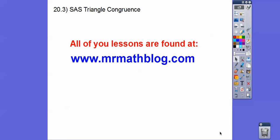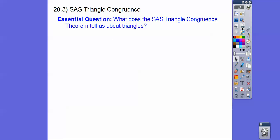Hey everybody, this lesson is SAS Triangle Congruence, which means side, angle, side. Our essential question is what does the SAS Triangle Congruence Theorem tell us about triangles? So again, this is side, angle, and then side right there.